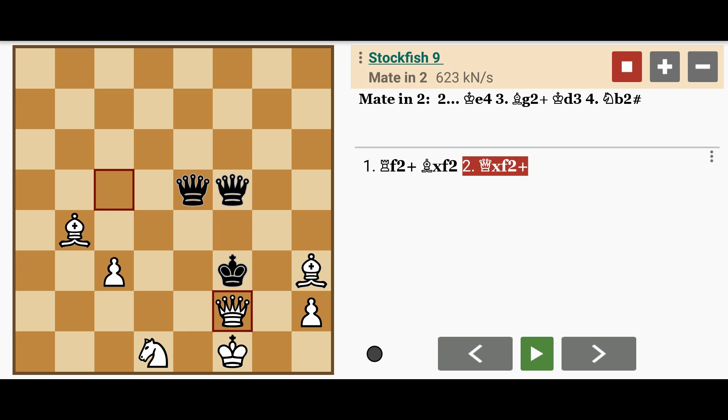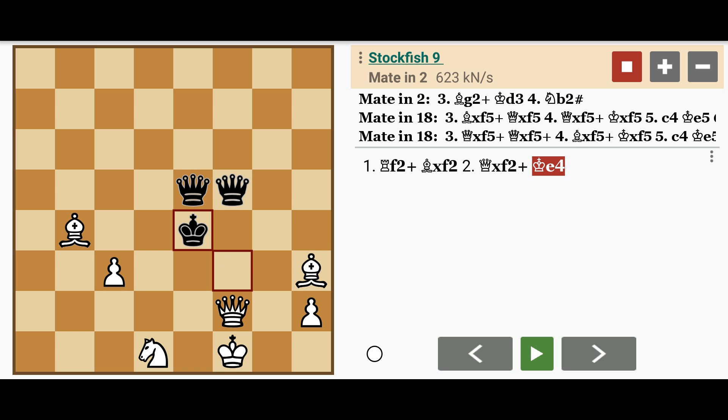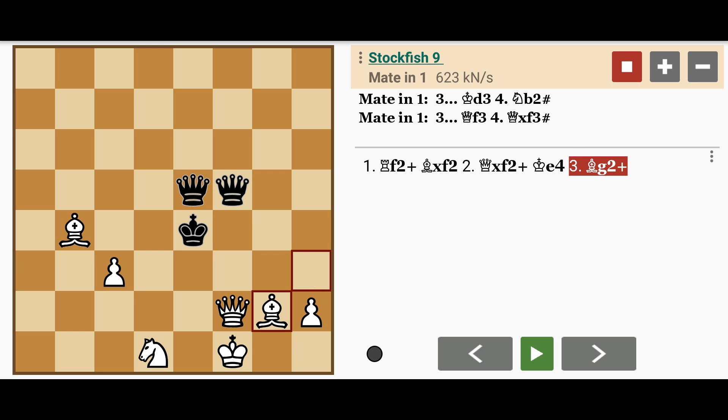Black has only one square, king to e4. White plays bishop to g2, check.